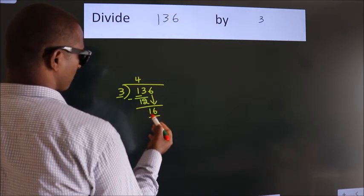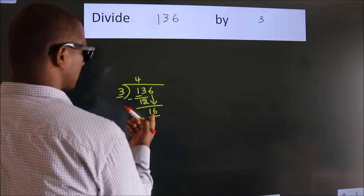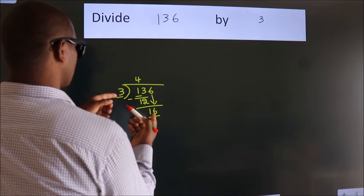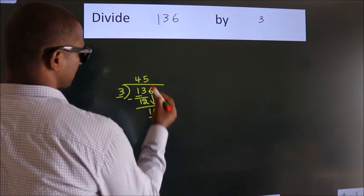So, 16. A number close to 16 in 3 table is 3 fives, 15.